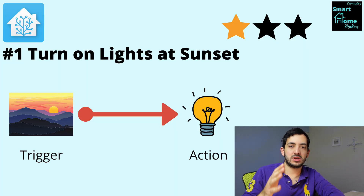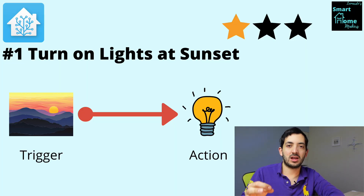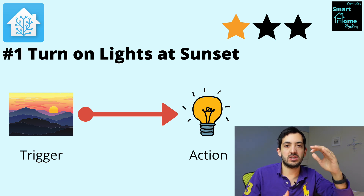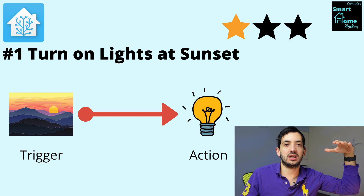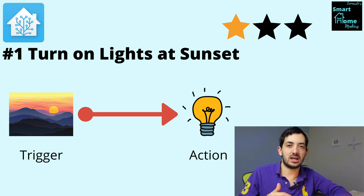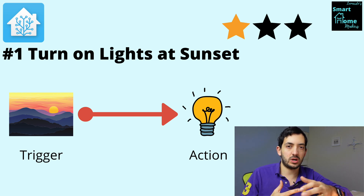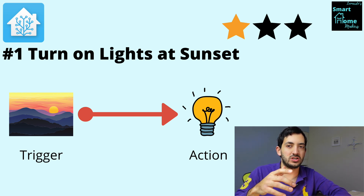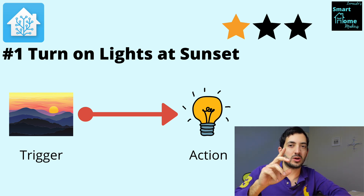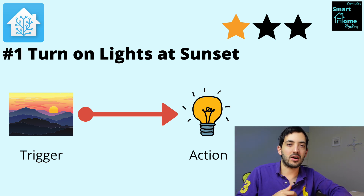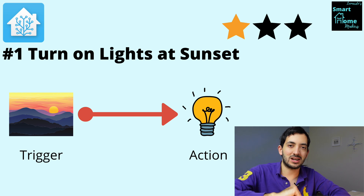Today we're going to start nice and simple — turning on lights at sunset. The trigger is the Sun and its position, defined by the sunset state. It can be sunrise or sunset, and then we have an action, which can turn a bulb on, a switch, multiple bulbs, or even a scene. This is quite simple to achieve. I'm going to rate this a one-star beginner automation.